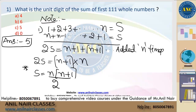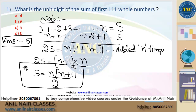Students who cannot remember the formula: this is the proof. Sum of the first n natural numbers = n(n+1)/2. For example, if N+1 is added N times, that equals N(N+1). Dividing by 2 gives S = n(n+1)/2.